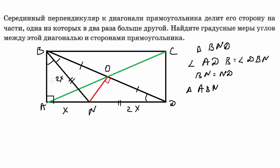Итак, один угол равен 30°, поэтому другой угол треугольника ABN равен 60°. Смежный угол: 180° − 60° = 120°. В равнобедренном треугольнике BND: (180° − 120°) ÷ 2 = 30°.